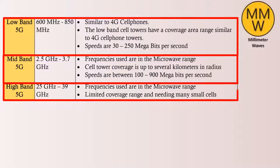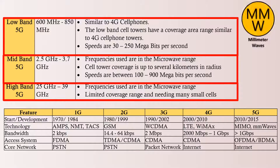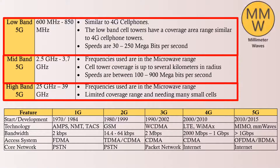High band 5G uses microwaves with frequencies between 25 GHz to 39 GHz. Note that microwave frequencies range between 1 GHz to 1000 GHz, with respective wavelengths of 30 to 0.03 cm. A question may be asked: if we are using microwaves in cell phone communication, then why does our skin not burn, just like a toast gets burned in a microwave oven?